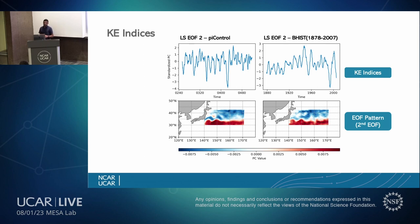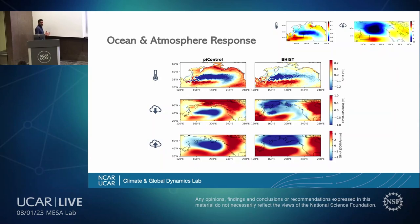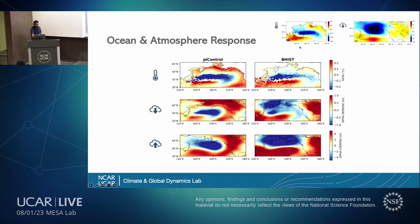These are the two KE indices we produced — the Kuroshio Extension indices — from the PI control and the historic output. As you can see, these two EOF patterns also show a similar meridional temperature gradient in both PI control and historic output. When we regress sea surface temperature and compare to the reanalysis output, in both historic and PI control CESM outputs we see the meridional gradient — even though there are slight differences — which supports the north-south pressure dipole pattern.